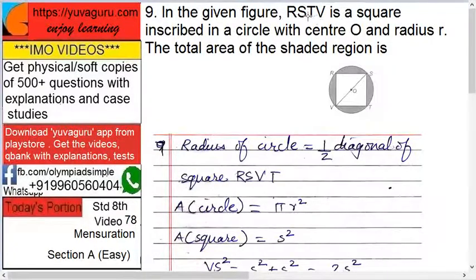In the given figure, RSTV is a square inscribed in a circle with center O and radius R, okay? The total area of the shaded region is, see here, this OB equals to R, OS equals to R. That is radius, right? So, we have to find the shaded area. It's very simple. Find the area of the circle, then find the area of the square.